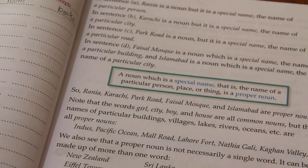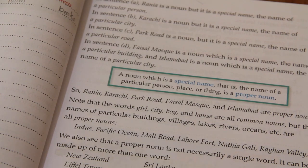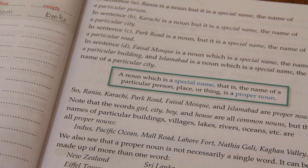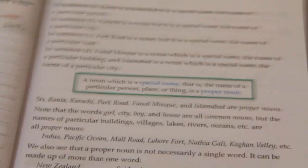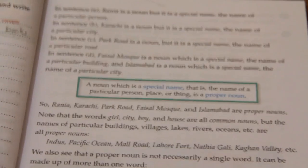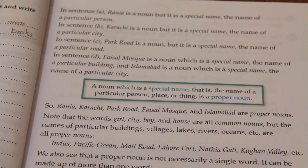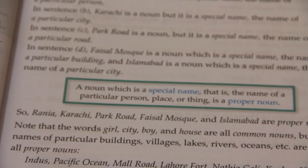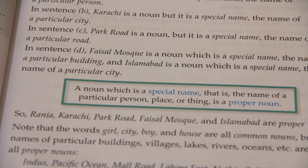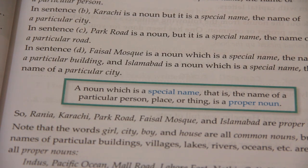Now open page number 5. A noun which is a special name — that is, the name of a particular person, place, or thing — is a proper noun. For example: New Zealand, Sri Lanka, Regent Street, Apple Tower, Marine Drive, Victoria Memorial.